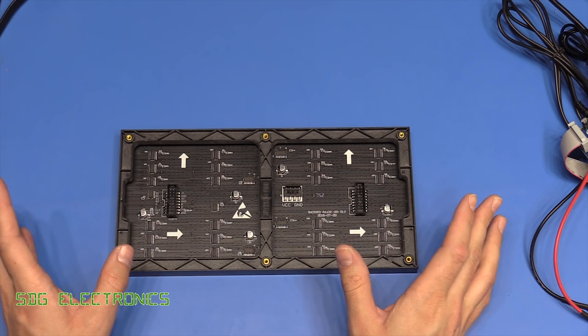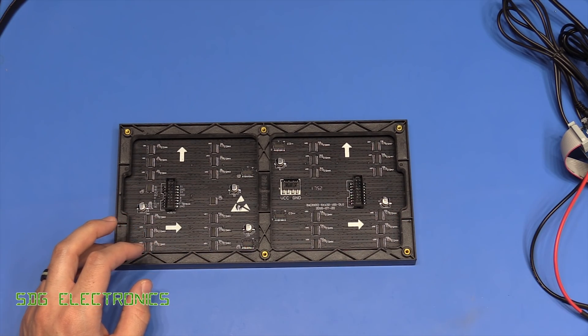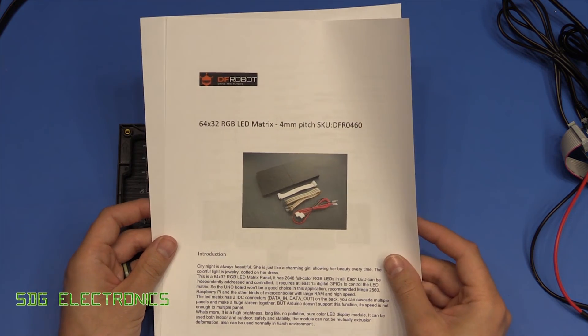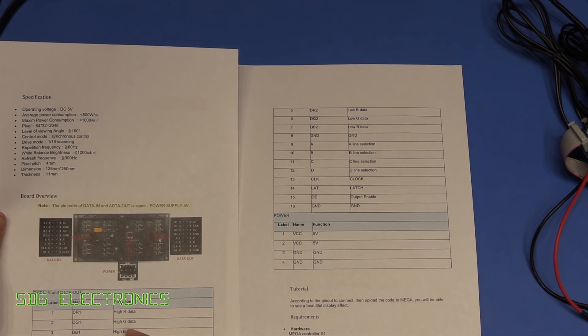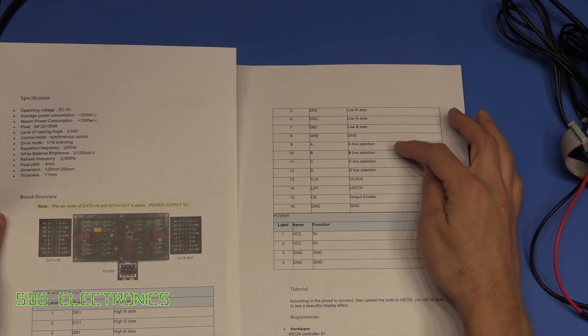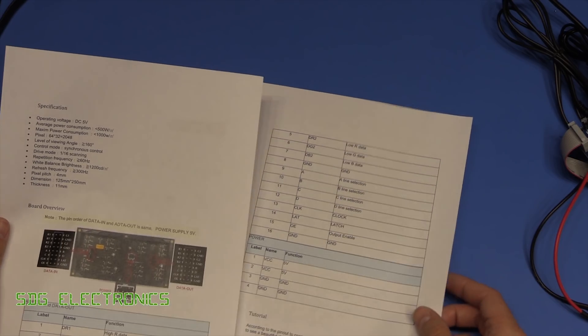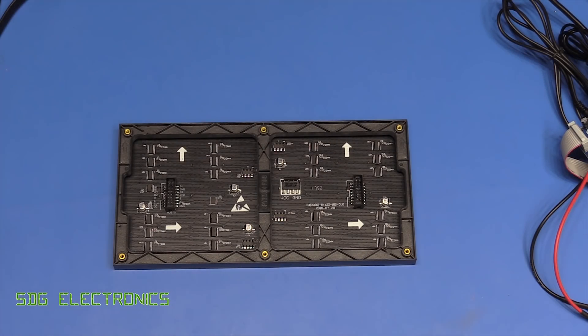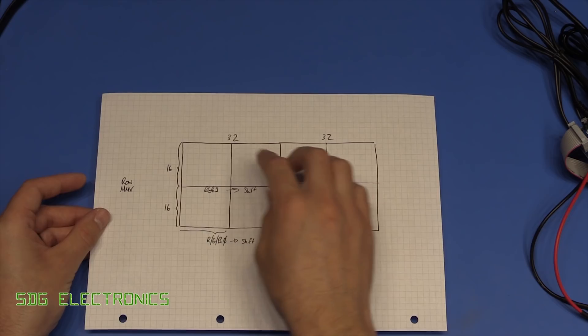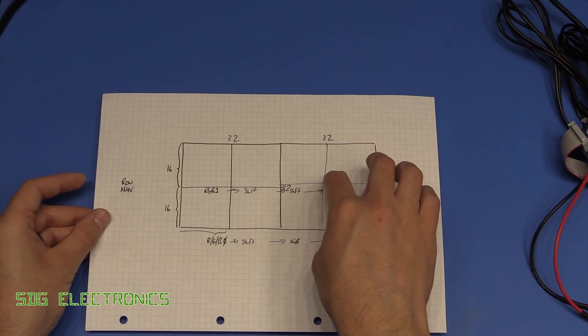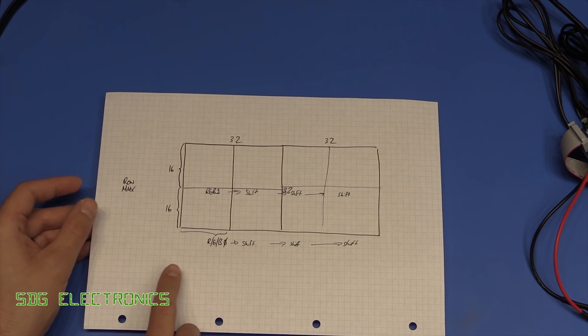There's not really that much in the way of documentation. I had a search on the internet on these displays, I didn't find a huge amount of information. There was a few hints in a few datasheets for similar products. So you can see here we've got two lots of RGB data and then ABC and D line selection and then the clock, latch and output enable. And basically what I've worked out is that we have this array of 32 by 32 LEDs and then it just copied into another one to make the 64 display. I think you can buy as a 32 by 32 and various other combinations.